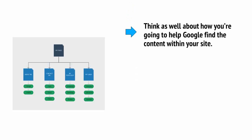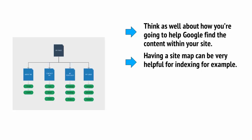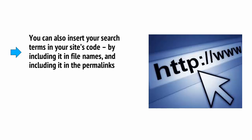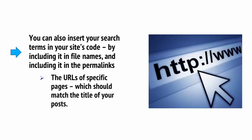There are also a few miscellaneous tips that can help improve your on-page SEO. Using copyright notices and legal disclaimers can be seen as a positive sign by Google, as these make your website look more professional and more like a real business. Think about how you're going to help Google find the content within your site — having a sitemap can be very helpful for indexing. Avoid using images that have text in them, and definitely avoid Adobe Flash, since Google is unable to read that type of copy. You can also insert your search terms into your site code by including them in file names — for example, the file name of an image — and by including them in the permalinks, which are the URLs of specific pages and should match the title of your posts.